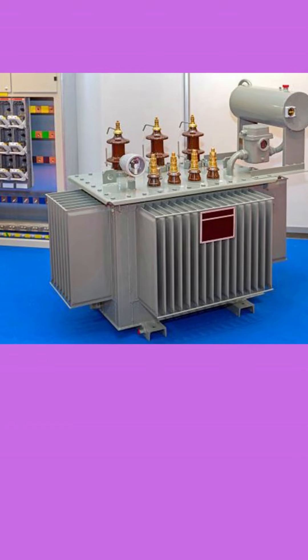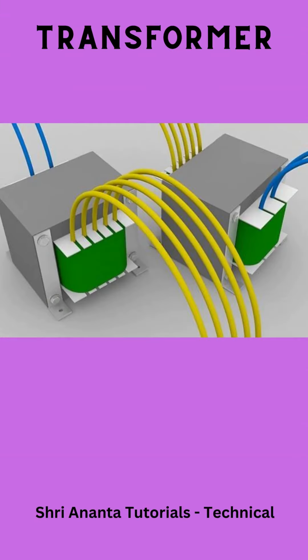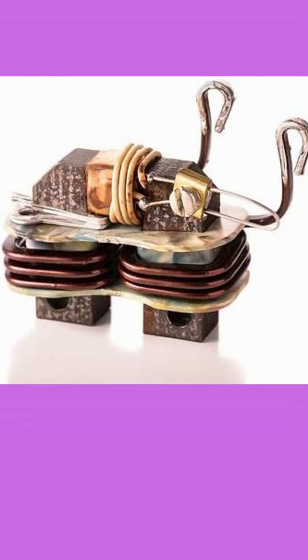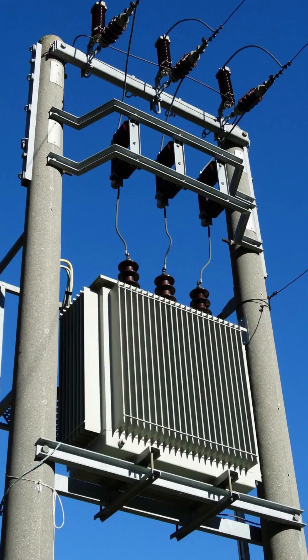Transformers come in various sizes and types, ranging from small transformers used in electronic devices to large power transformers found in substations. Power transformers can handle high power levels and are often immersed in oil for insulation and cooling purposes. Other types include auto transformers, which share a common winding between the primary and secondary circuits, and distribution transformers, which supply electricity to residential and commercial areas.